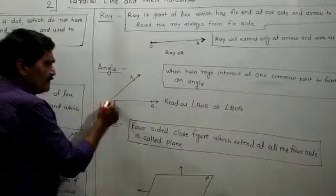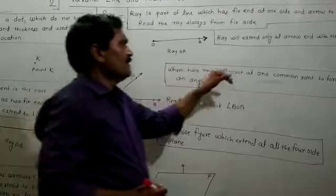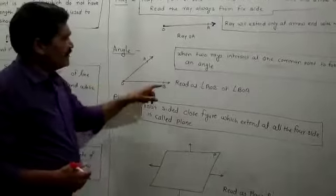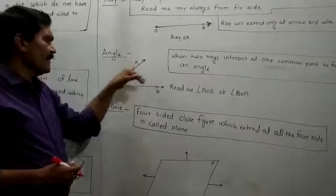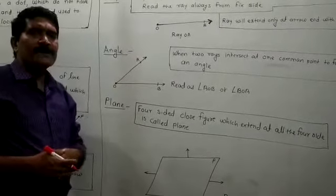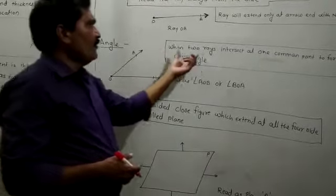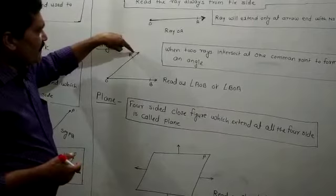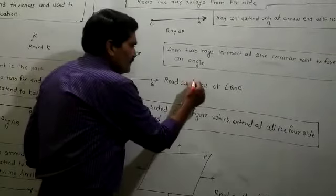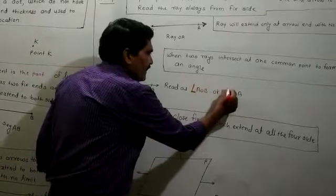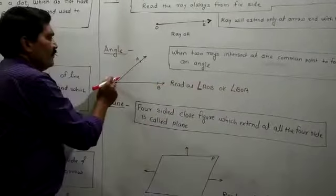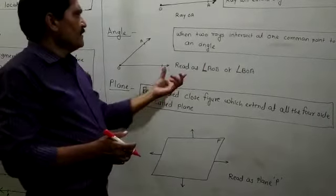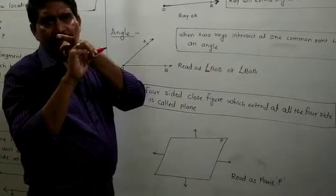The next concept is Angle. When two rays intersect at one common point, they form an angle. This is the common point O of ray OA and ray OB. When these two rays intersect at point O, whatever diagram is formed, that is called an angle. To read an angle, you start from one arrow end and go through the vertex. The symbol is the angle sign, and you read this as 'angle AOB' or 'angle BOA.'